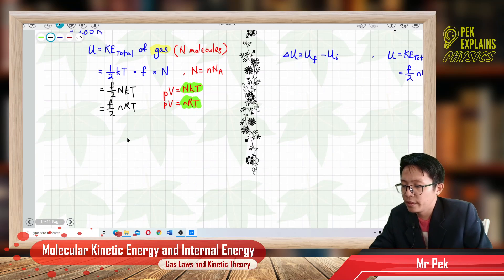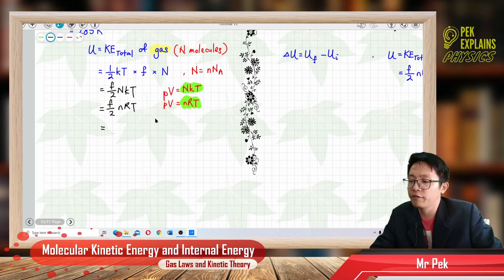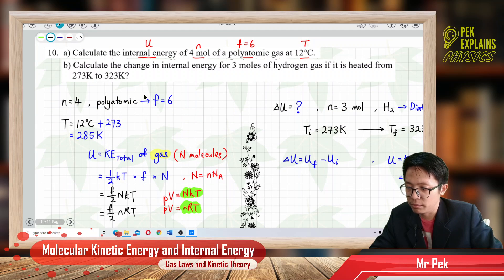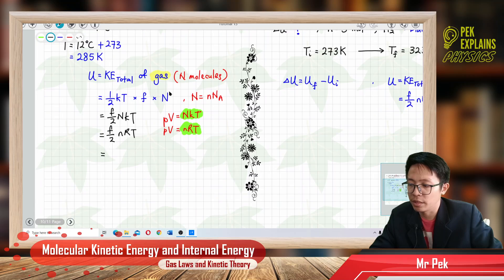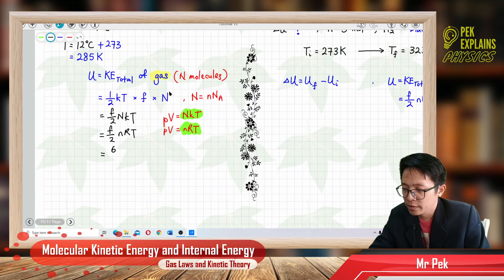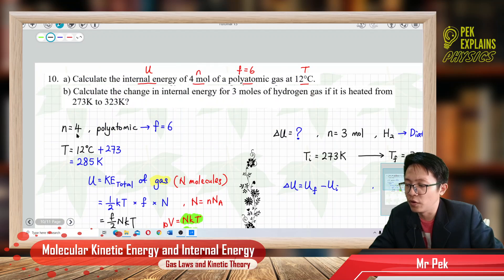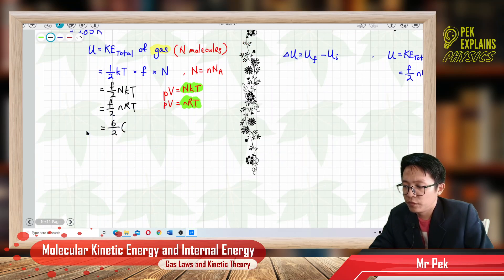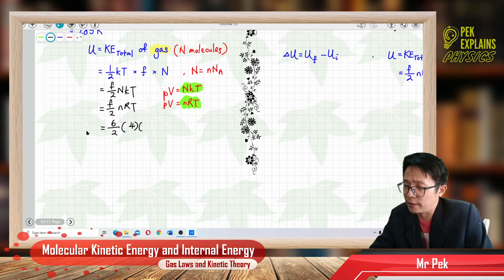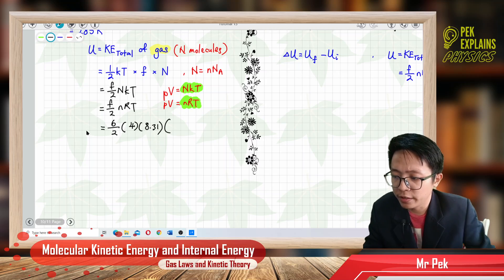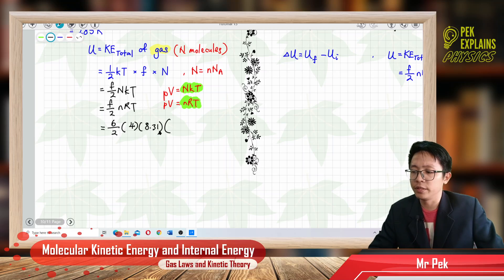So how many degrees of freedom? It is a polyatomic gas, so it has 6 degrees of freedom. Put in 6. The number of moles is 4. R is 8.31 — you can find the value of R from the list of constants. Temperature in degrees Celsius must change to Kelvin, which is plus 273. You don't need to use 273.15; you can just use 273, though both are accepted. We normally just use 273.